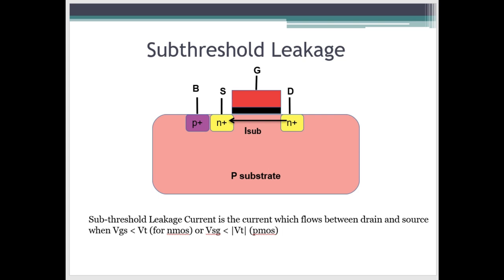But in real transistors, the current does not abruptly cut off below threshold. Rather, it drops off exponentially. Therefore, even when VGS is less than VT, for a small amount of time, there is a current that flows between drain to source. And that current is called sub-threshold leakage current.